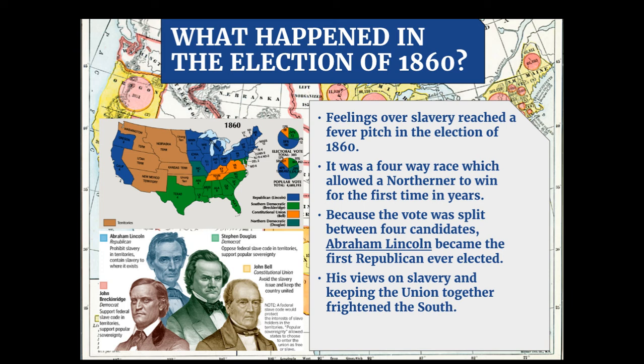That was a non-starter to the southern states. As a result, by the time Lincoln became president — between November and March — many southern states seceded and formed their own country: the Confederate States of America. They literally said we are no longer part of the United States, banded together, and formed a new nation. By the time Lincoln became president, he was only president over half the country he originally ran to lead. And we have the seeds here of a titanic conflict — by far the most important in the history of this nation.